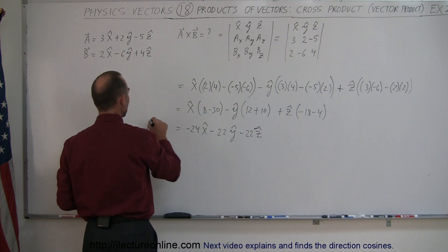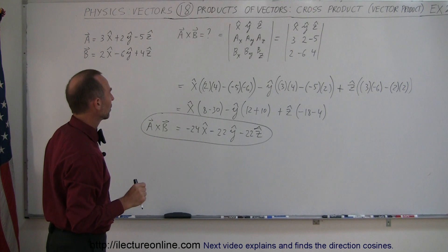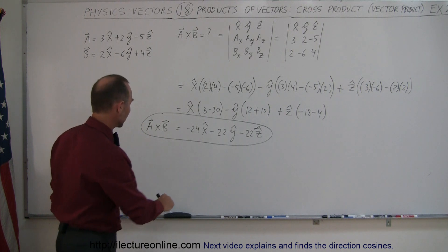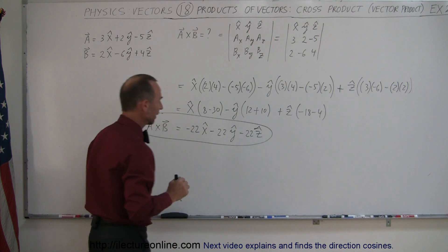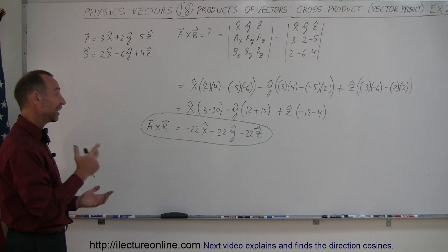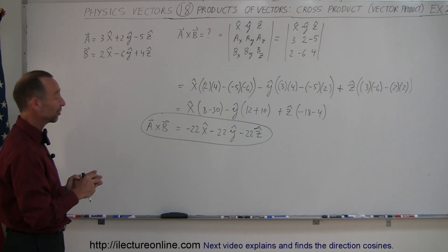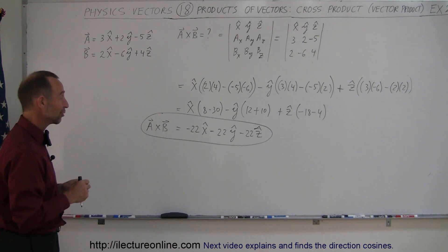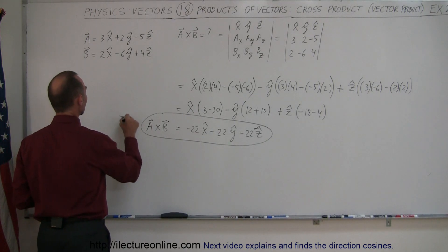And so this is simply A cross B, giving us minus twenty-two in X, minus twenty-two in Y, and minus twenty-two in Z. I just picked those numbers at random — and look at that, all three components came out to minus twenty-two. That was not pre-determined.